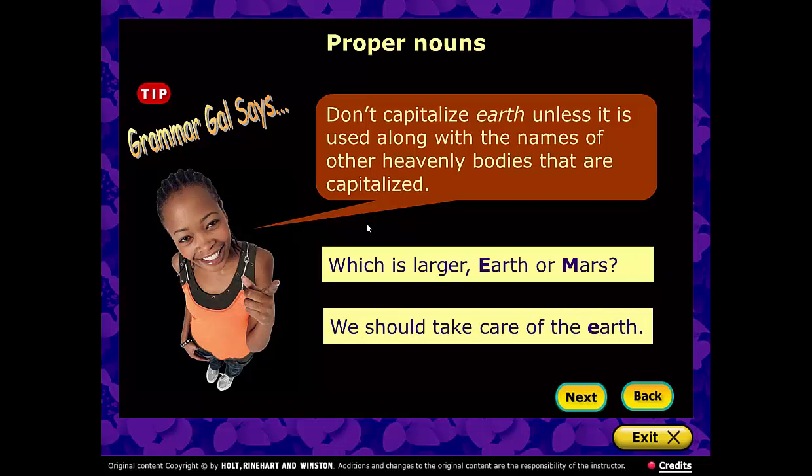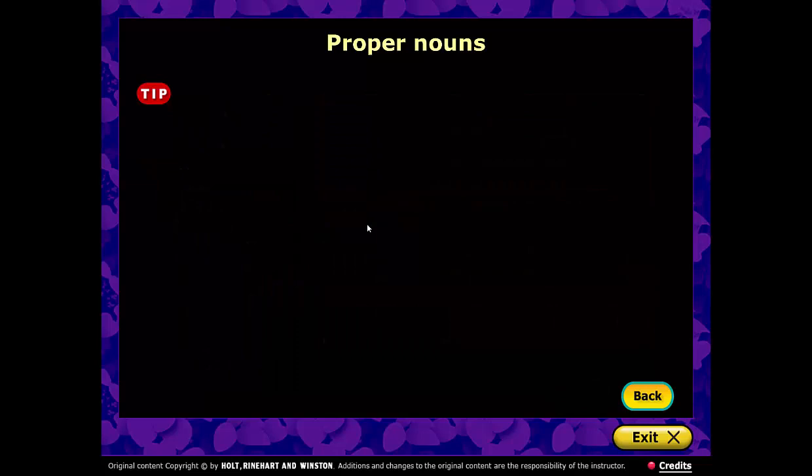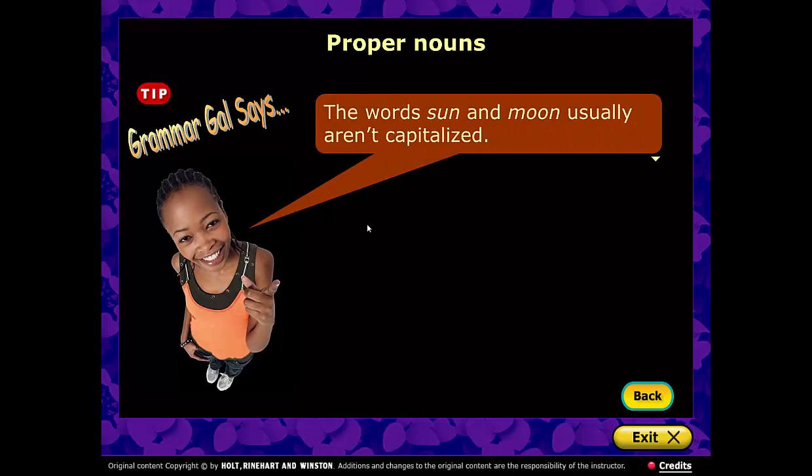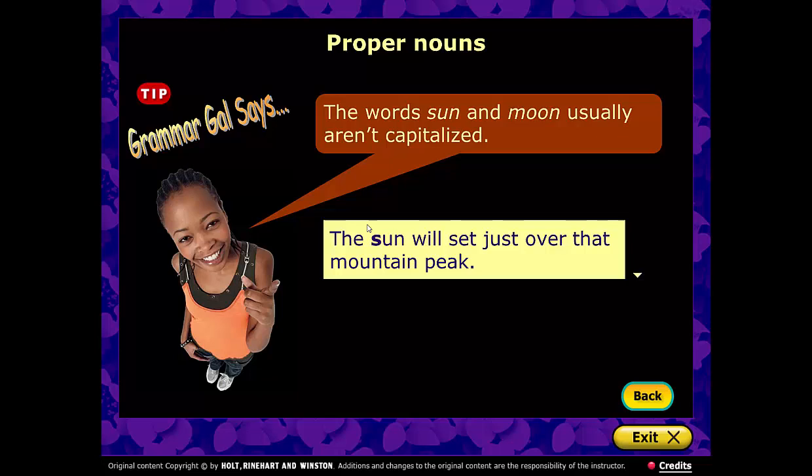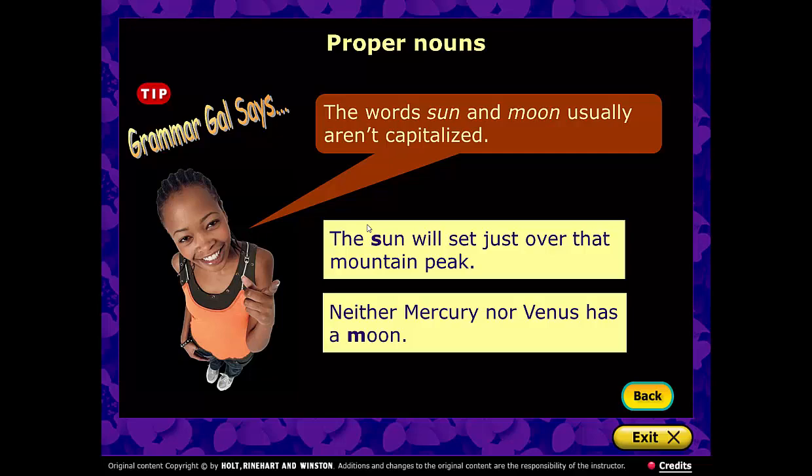Along with Earth, Sun and Moon are usually not capitalized either. You might say 'the sun will set just over that mountain peak' — lowercase s. And 'Neither Mercury nor Venus has a moon' — keep that m lowercase.